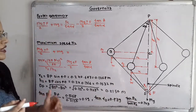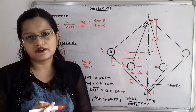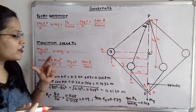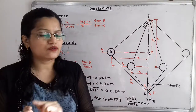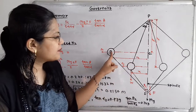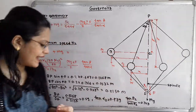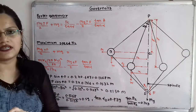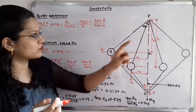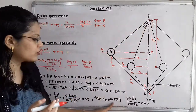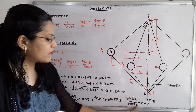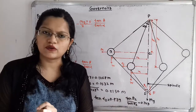Now we calculate angle beta 2. tan(beta 2) = BG / DG = 0.1268 / 0.2154 = 0.59. tan(alpha 2) = tan 40 = 0.839. The ratio tan(beta 2) / tan(alpha 2) = 0.703.